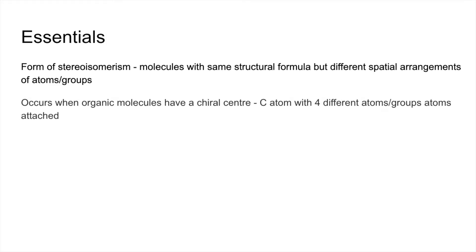It occurs when organic molecules have a chiral centre, so that's a carbon atom with four different atoms or groups of atoms attached. Isomers are non-superimposable mirror images of each other. Isomers are referred to as enantiomers.